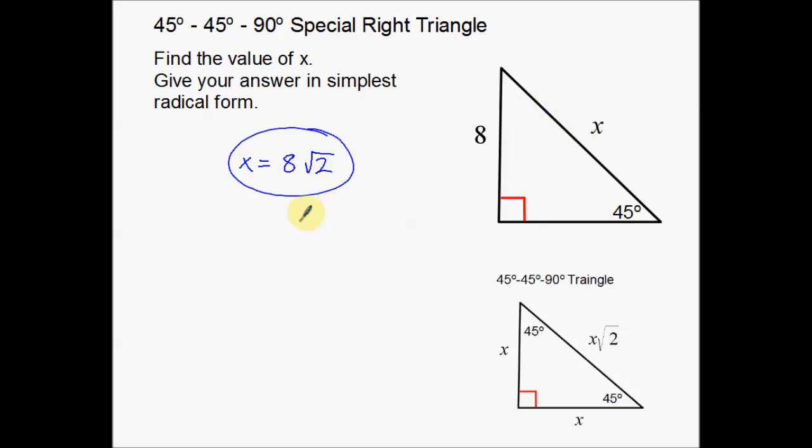Now 8 times the square root of 2, if I grab a calculator real quick, 8 times the square root of 2 is going to be about 11.3137. There's more decimals after that. But what that tells us is that the hypotenuse is always supposed to be the longest side of a right triangle. And in this case 11.3 is bigger than 8, so we know we did that correctly.